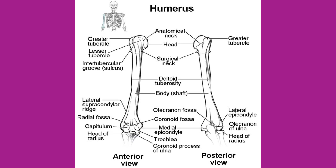As its name indicates, the deltoid tuberosity is the site of attachment for the deltoid muscle. Distally, the humerus becomes flattened. The prominent bony projection on the medial side is the medial epicondyle, and the much smaller lateral epicondyle is found on the lateral side of the distal humerus. The roughened ridge of bone above the lateral epicondyle is the lateral supracondylar ridge. All of these areas are attachment points for muscles that act on the forearm, wrist, and hand. The powerful grasping muscles of the anterior forearm arise from the medial epicondyle, which is thus larger and more robust than the lateral epicondyle that gives rise to the weaker posterior forearm muscles.